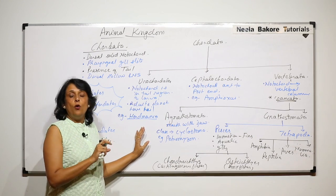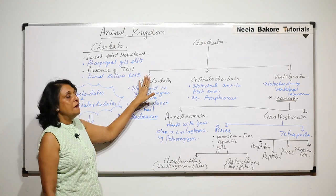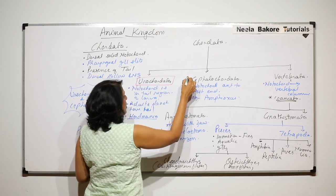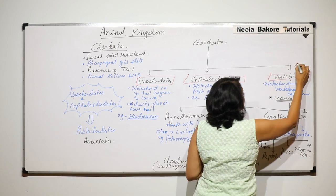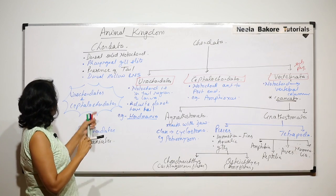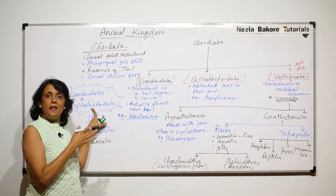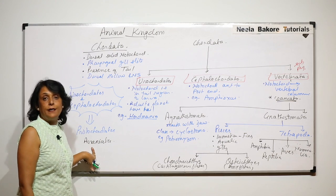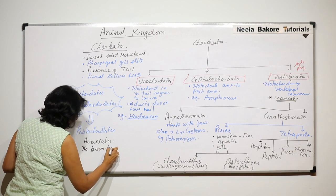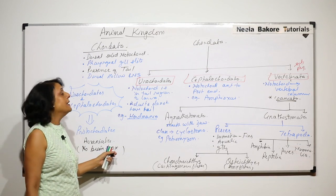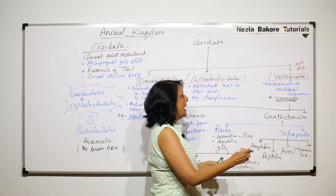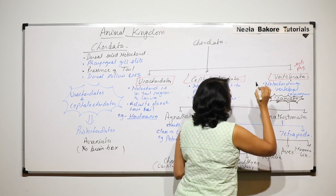When we have an overview of phylum Chordata, we find that it has been divided into three subphyla: Urochordata, Cephalochordata, and Vertebrata. These are the subphyla. Out of these three, two (Urochordates and Cephalochordates) are very primitive amongst chordates. They are called Protochordata and there is no cranium, no brain box. That is why they are known as Acraniata.